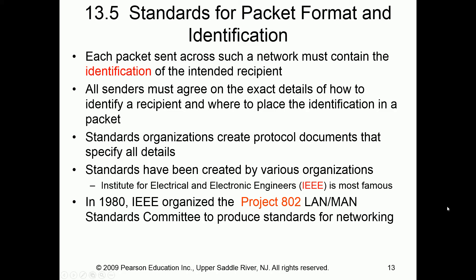Each packet sent across a network must contain some form of identification — some form of address. Without addressing, we can't get information from one location to another with any certainty. It's like mailing a letter — without an address it cannot get there. In the early 80s, the IEEE organization introduced Project 802, so 802.whatever is our networking and communication standards protocol.